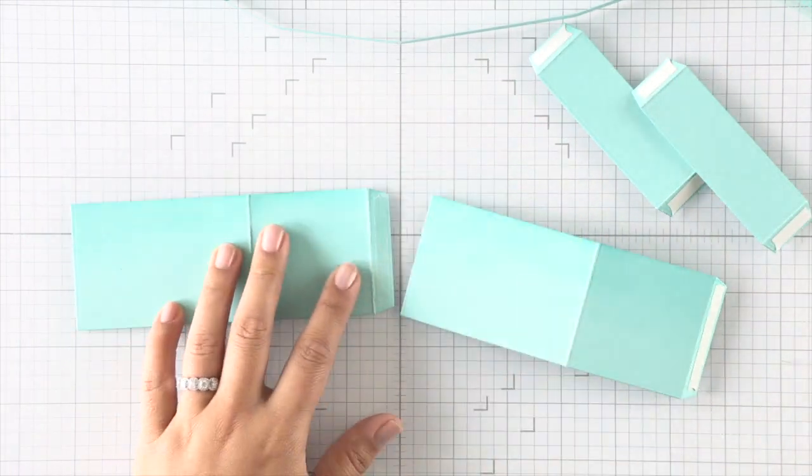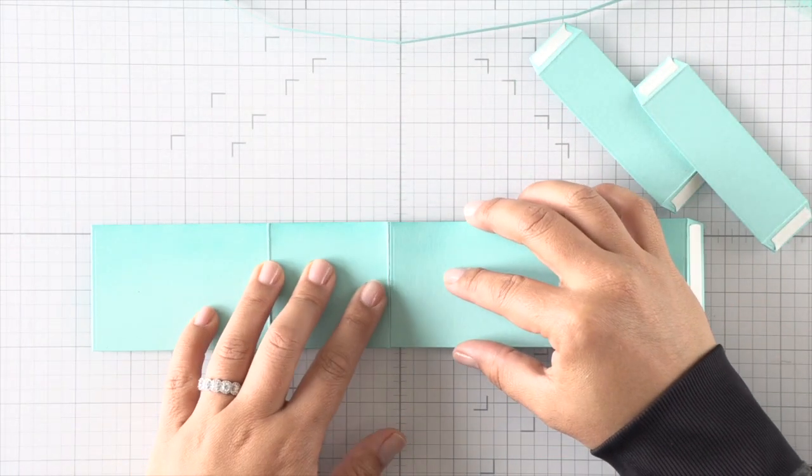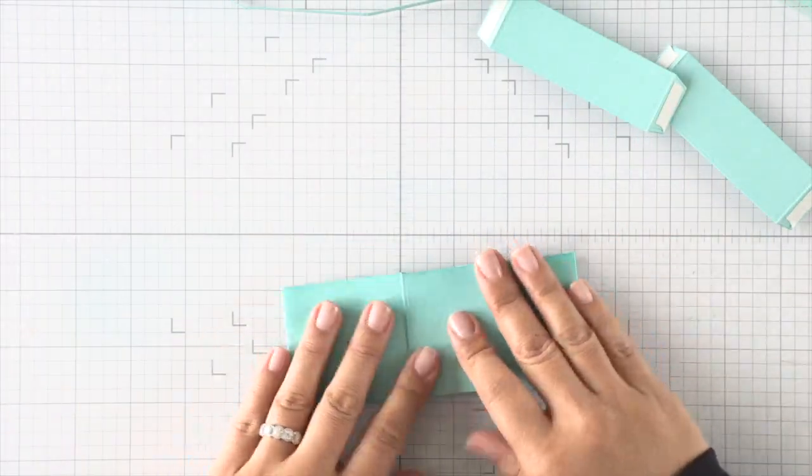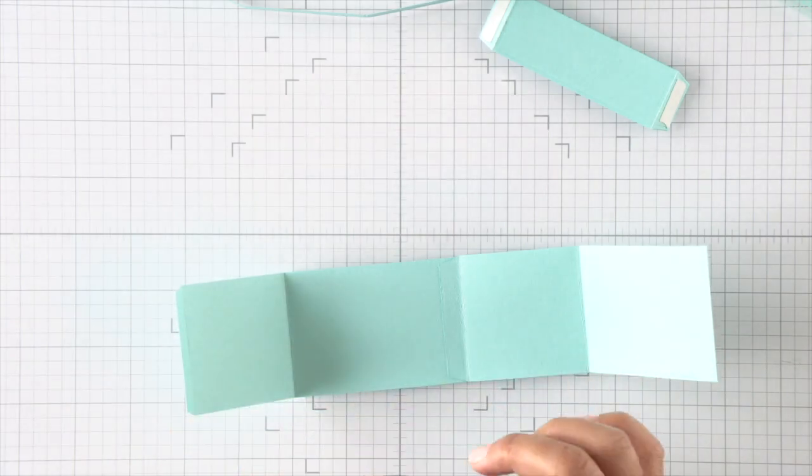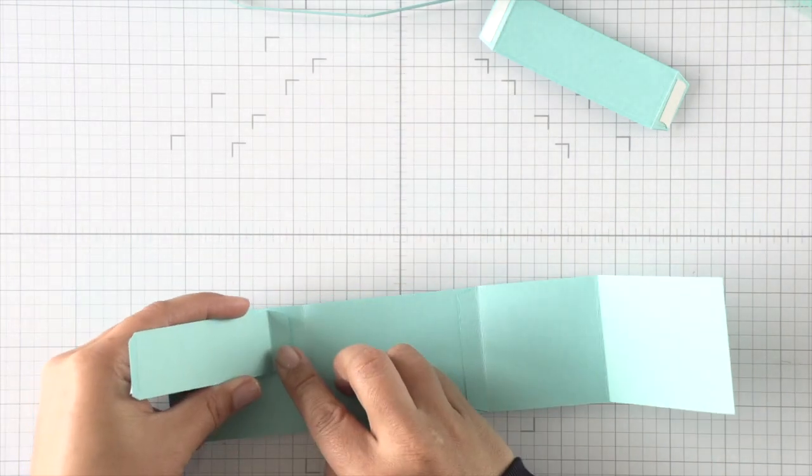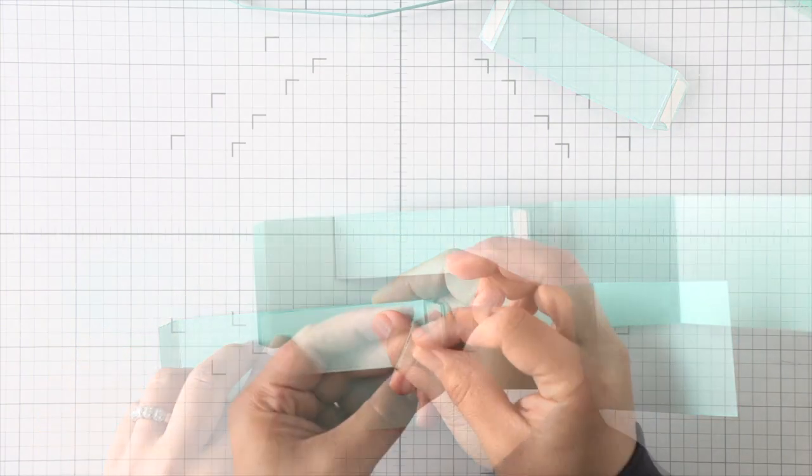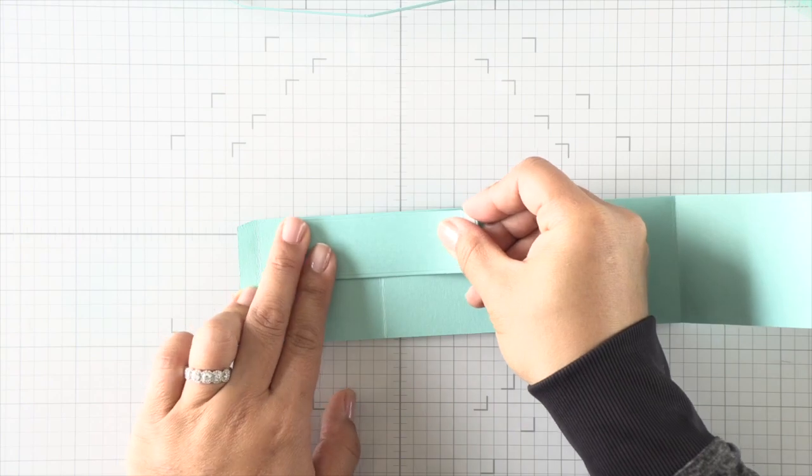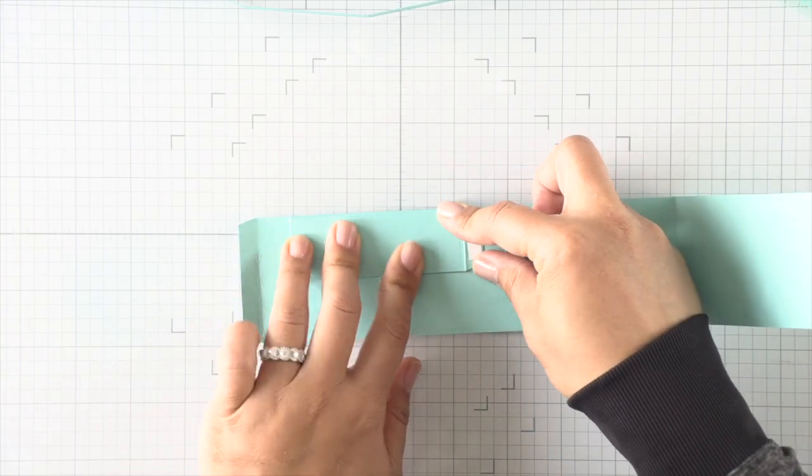I've added some strong double-sided adhesive on all of those adhesive tabs. Now I'm just gonna put my box together. I've lined everything up on my grid mat. As you can see, I'm not gonna put the box together yet—I'm gonna go ahead and apply my inserts in there, making sure that everything lines up perfectly. I'm adhering the tabs on the left to the box.